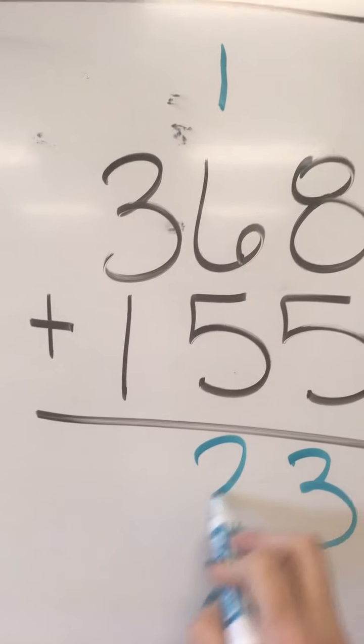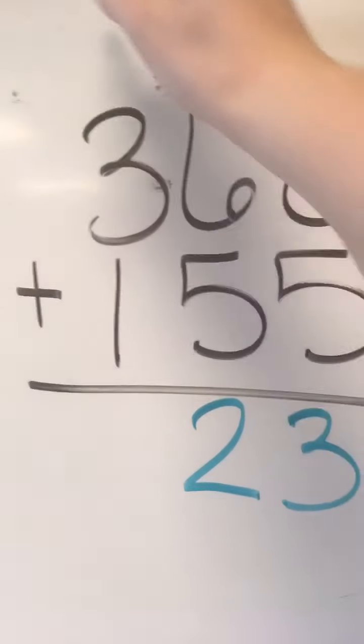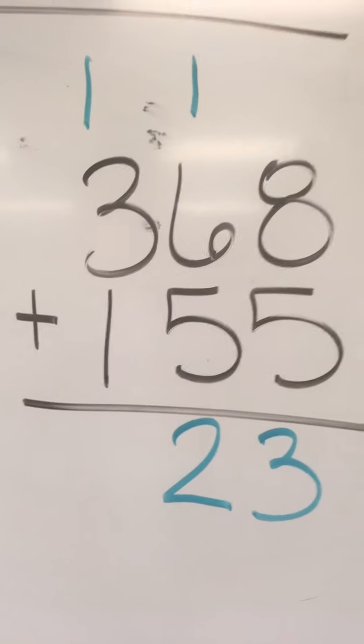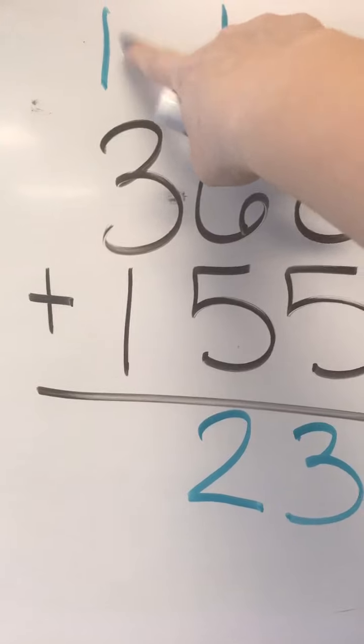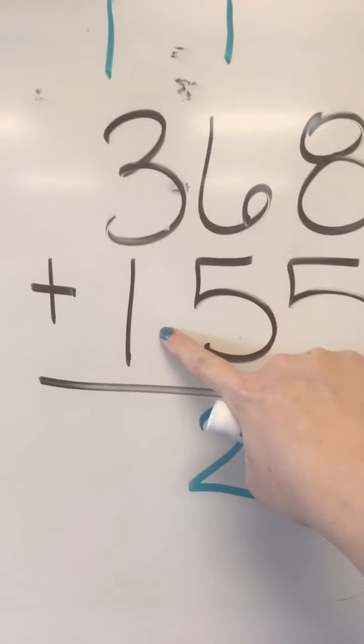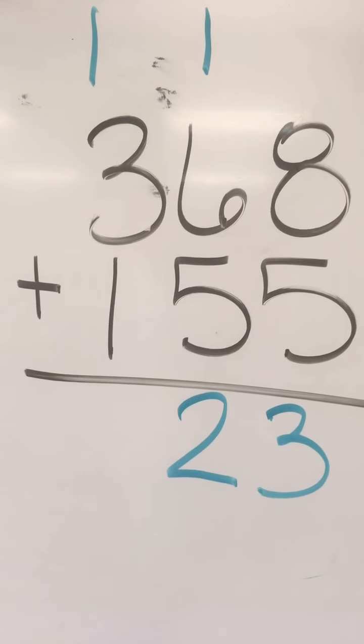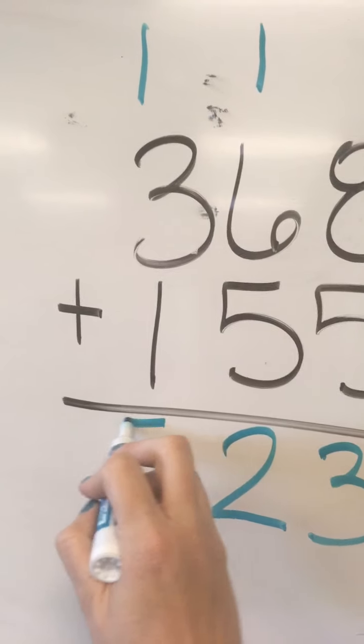We're going to put our two, and then regroup our ten into the hundreds place. Then we have one hundred plus three hundred, plus one hundred, five hundreds.